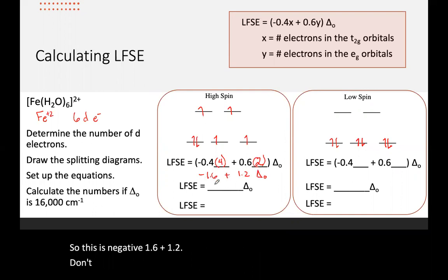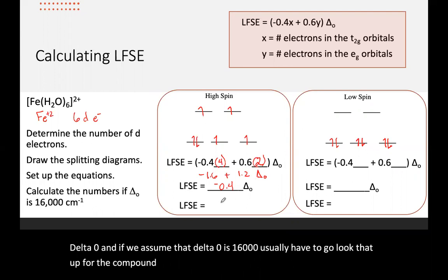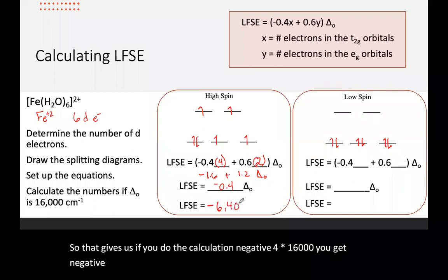And that gives us negative 0.4 times delta O. And if we assume that delta O is 16,000, usually you have to go look that up for the compound or measure it with UV. So if we do the calculation, negative 0.4 times 16,000, you get negative 6,400 centimeters to the minus one.